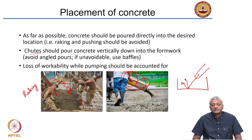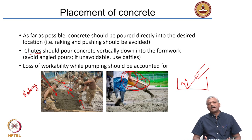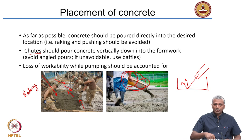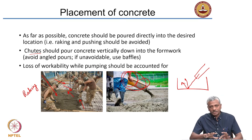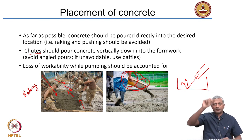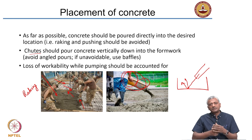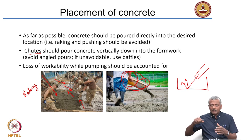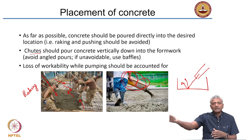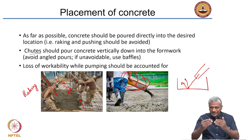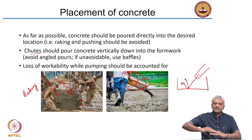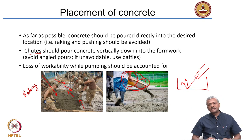Loss of workability may happen during pumping. Consider the scenario of a high-rise building where the concrete truck reaches the bottom and you are on the 15th floor. You create a pipe system that carries concrete from the ground floor to the 15th floor by applying pressure via a pump. The concrete flowing through the pipe experiences friction, which reduces its consistency or workability. The concrete must be designed at the ground floor for sufficient workability so that any losses during pipe travel can still be compensated at the point of pouring.